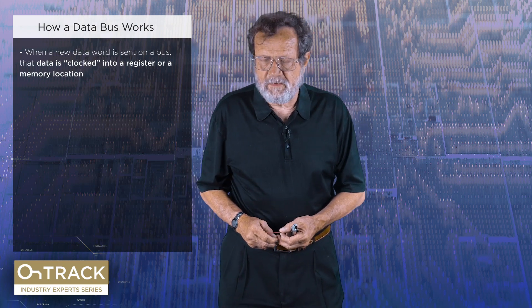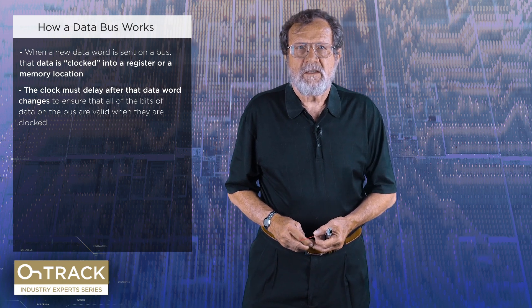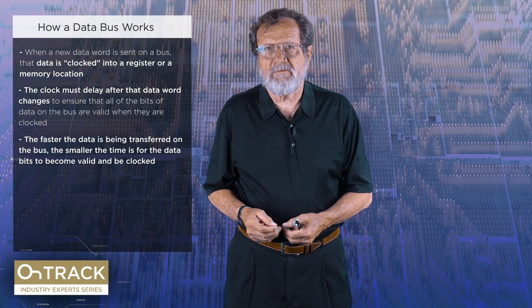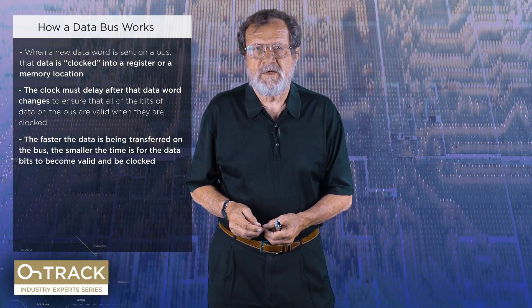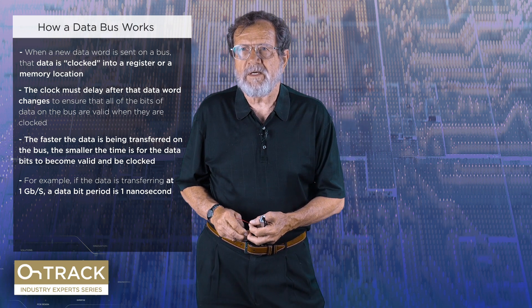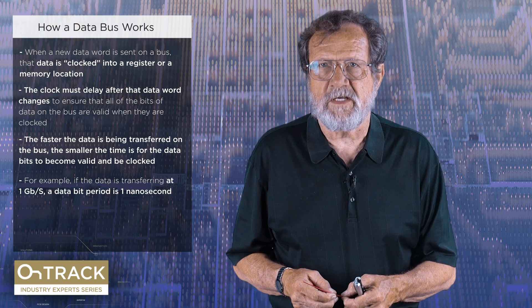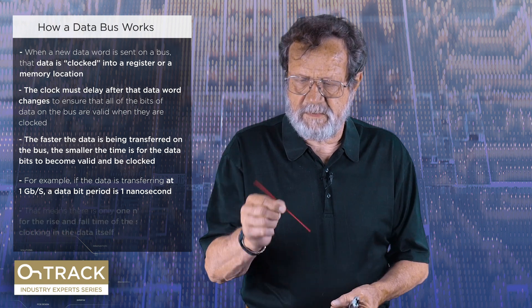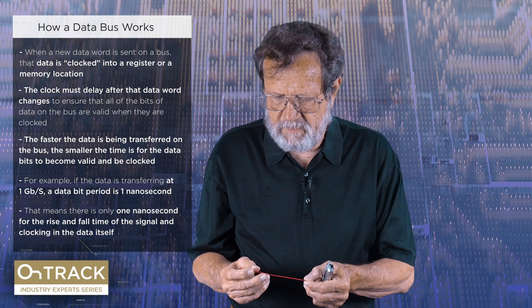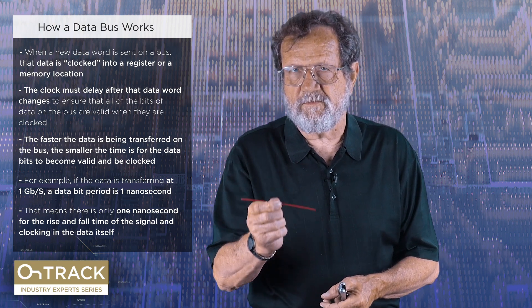When a new data word is sent on a bus, it gets clocked into a register or into memory. We want to delay the clock so that the data bits have time to settle to their final state before clocking. The faster the data becomes, the more accurately we have to do the clocking and more carefully match the length of the data lines to the clock. The example here is a data bus going at a gigabit per second — the bit period is one nanosecond. We want to center the clock in the middle of that bit period, meaning we delay the clock by 500 picoseconds. A nanosecond is six inches or 15 centimeters, so delaying the clock by 500 picoseconds corresponds to three inches.